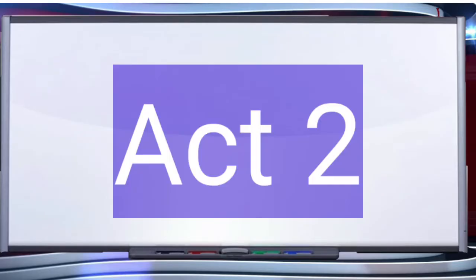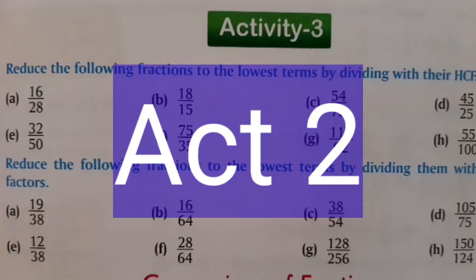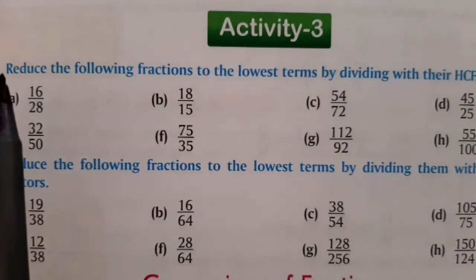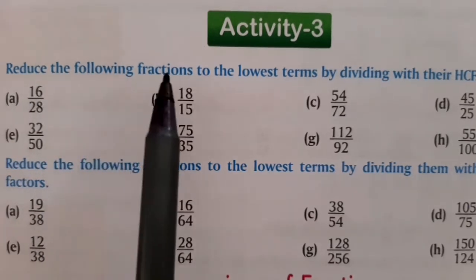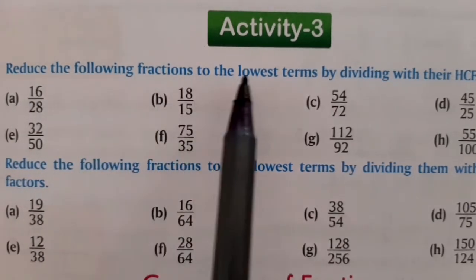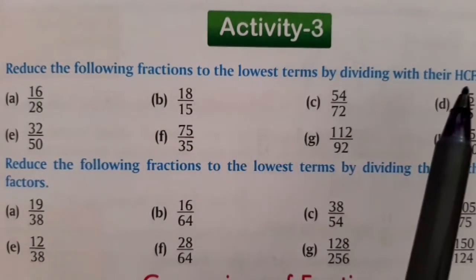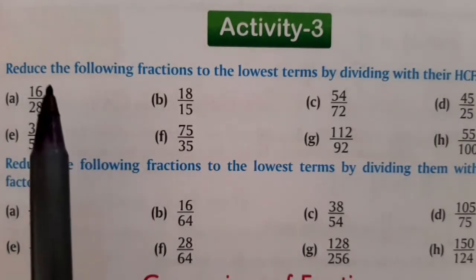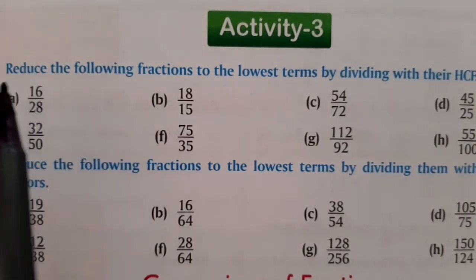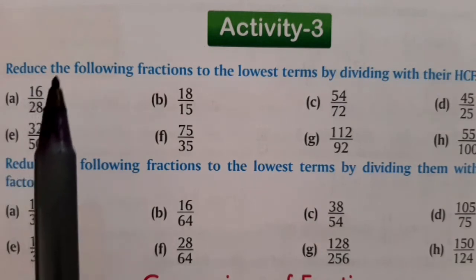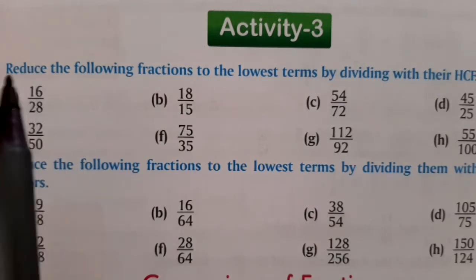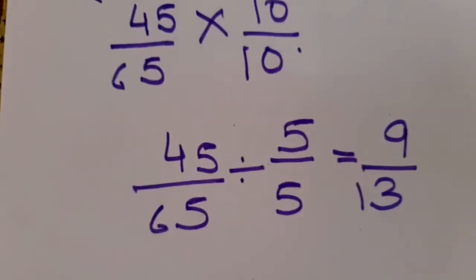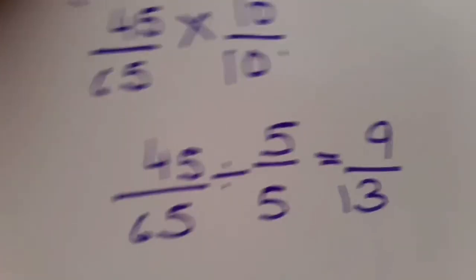We have to complete activity 2. Activity 3, question number 1: reduce the following fractions to the lowest term by dividing with the HCF. Here you have to find out the HCF of the first fraction, which is 16 upon 28. So you will find out the HCF of 16 and 28. The HCF of 16 and 28 is 4.